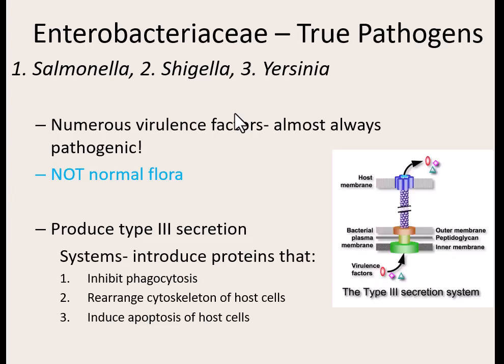All bacteria in this true pathogen group have one virulence factor called a type 3 secretion system. Here's how it works: the bacteria's plasma membrane attaches to the host cell membrane, and because they can attach, it almost forms a little tube so they can transmit different types of virulence factors, enzymes, and proteins directly into our cells to cause damage. They can attach easily and literally have this ejection system to attack our cells. Some things injected inhibit phagocytosis, some rearrange the cytoskeleton, and some induce apoptosis or cell death.